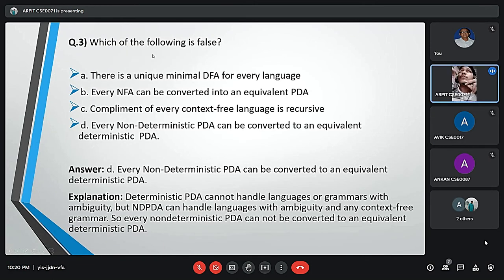The third question is: Which of the following is false? The options are: there is a unique minimal DFA for every language; every NFA can be converted into an equivalent PDA; complement of every context-free grammar is recursive; every non-deterministic PDA can be converted to an equivalent deterministic PDA. The false statement is D. It is because a deterministic PDA cannot handle languages or grammars with ambiguity, but NDPDA can handle languages with ambiguity and any context-free grammar.